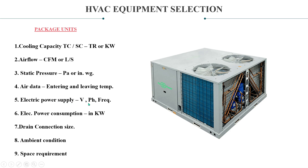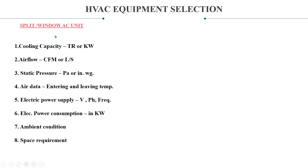Electrical power supply — volts, phase and frequency. Electric power consumption in kW. Drain connection size shall also be considered. Ambient conditions and space requirement. When it comes to split and window units, the drain connection is also considerable. You have to consider the drain connection as well, as the drain hose will run with the coil and will be connected to other drain pipes or a nearby floor drain.